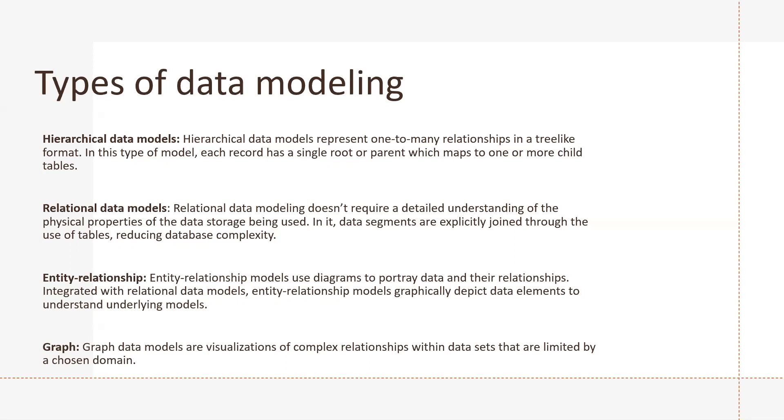A hierarchical database model organizes data into tree-like structures with data stored as interconnected records with one-to-many arrangements. Hierarchical database models are standard in XML and GIS. Hierarchical data models represent one-to-many relationships in a tree-like format. In this type of model, each record has a single root or parent which maps to one or more child tables.